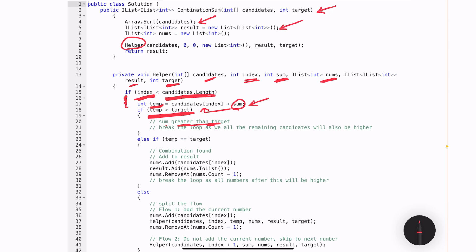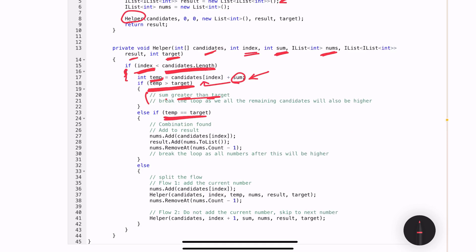If the temporary sum is equal to the target, then I am adding the number index is pointing to the temporary list, adding the temporary list or array to my result, and then removing it so I can use it later on.